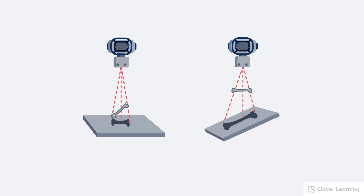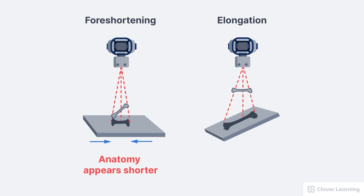There are two types of shape distortion: foreshortening and elongation. Foreshortening is when the anatomy of interest appears shorter on the radiograph than the anatomy truly is. Elongation is when the anatomy of interest appears longer on the radiograph than the anatomy truly is.